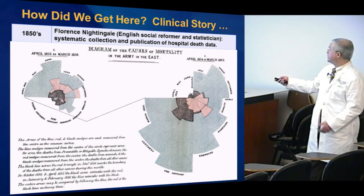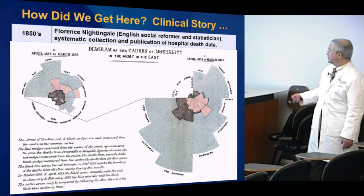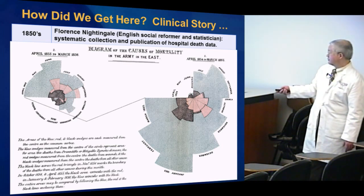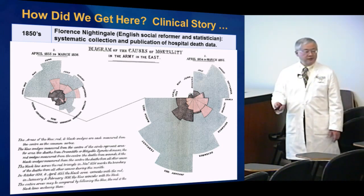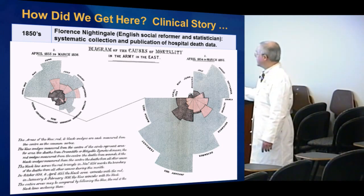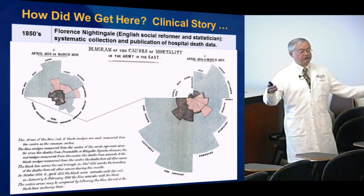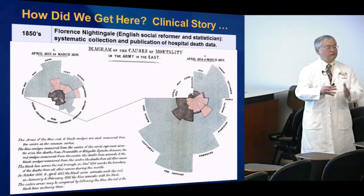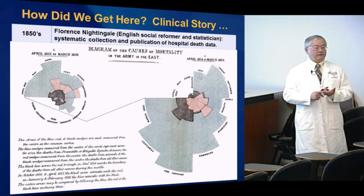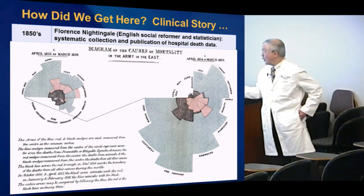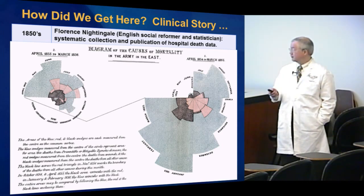In this polar diagram, she's explaining not just why people died but also when they died. The months are arranged around the circle; the darker area represents preventable deaths, black represents death from battle, and red represents death from infectious disease. She was the first to use polar plots to explain multiple dimensions — the reason people were dying and when they died relative to the months of the year.